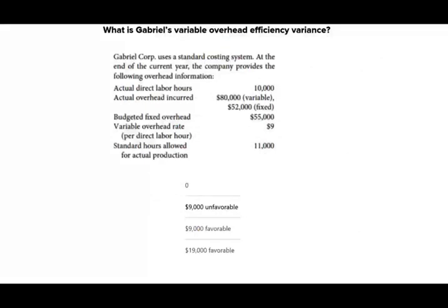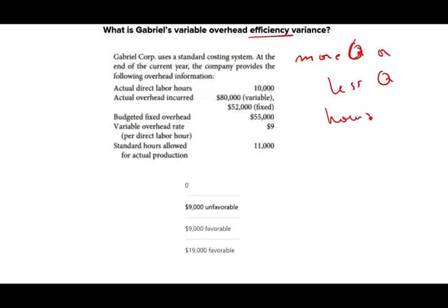The first question is: what is Gabriel's variable overhead efficiency variance? Before reading the rest of the question, we need to focus on what 'efficiency variance' means. It means: did we use more quantity or less quantity? Usually that quantity refers to hours when it comes to variable overhead. So before you read the question, make sure you understand it — did we use more hours or less hours?